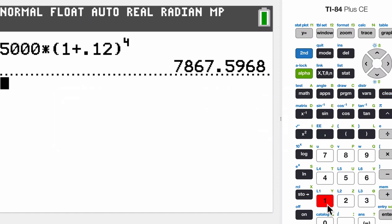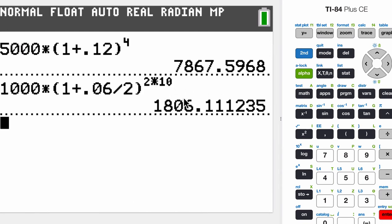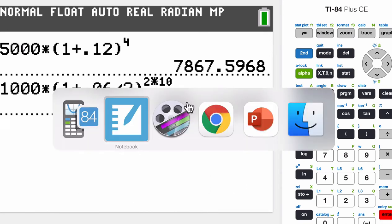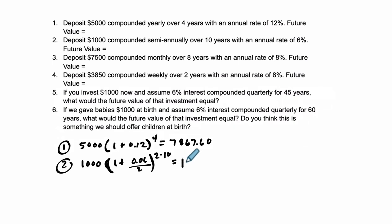We have 1,000 times 1 plus 0.06 divided by 2 to the power of, what was it, twice a year times 10 years? $1,806.11. So $1,806.11.